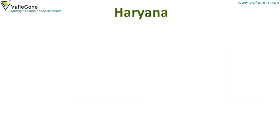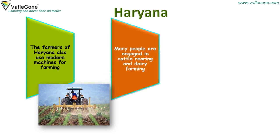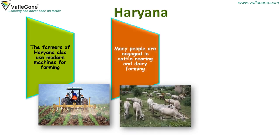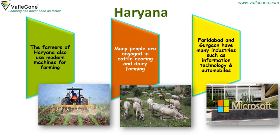Haryana: The farmers of Haryana also use modern machines for farming. Many people are engaged in cattle rearing and dairy farming. Faridabad and Gurgaon have many industries, such as information technology and automobiles.